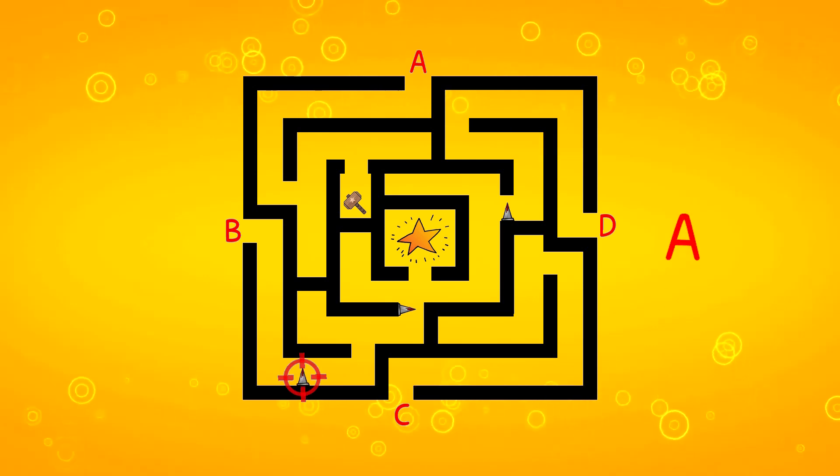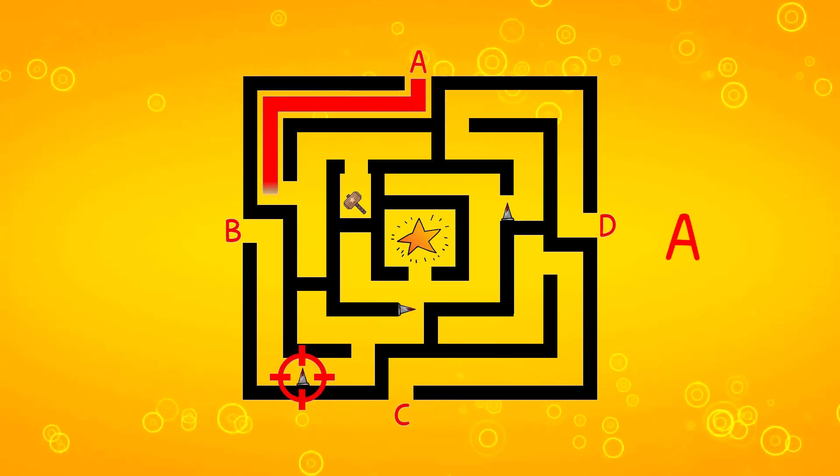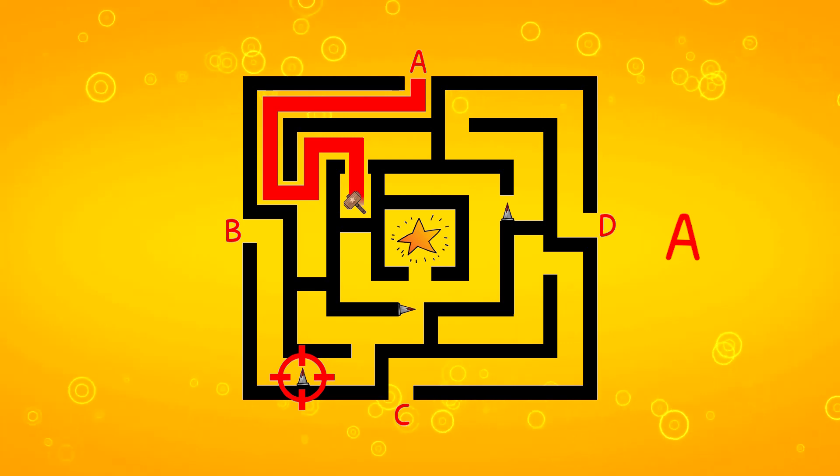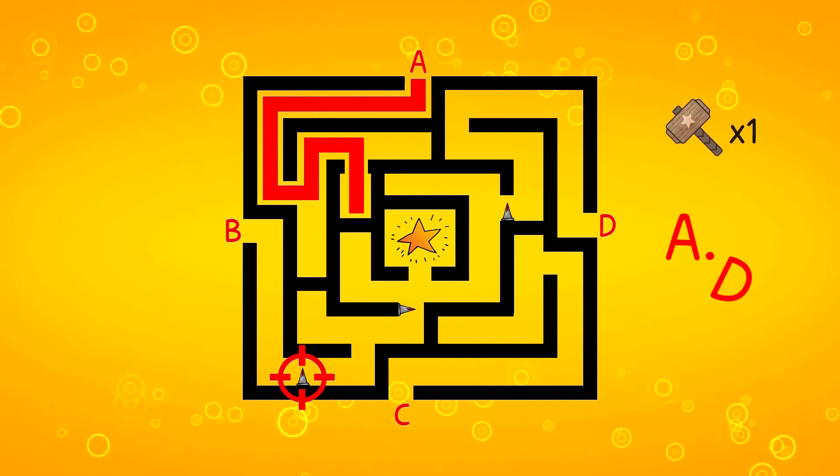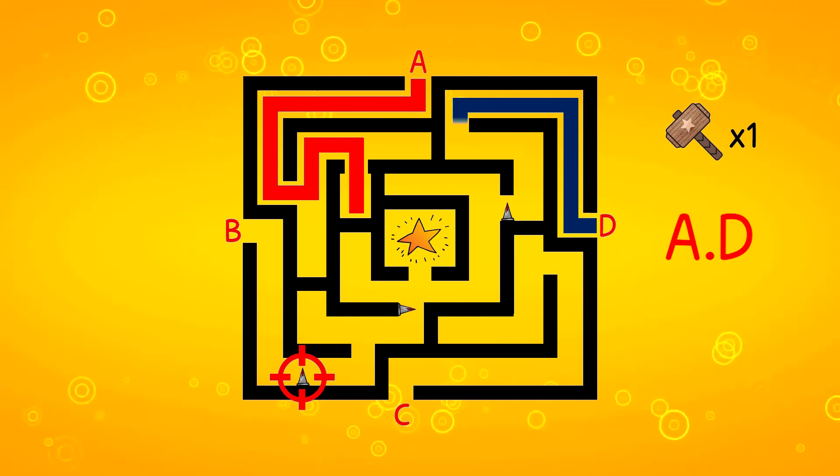First, we need to reach the wooden hammer through path A. Then, using the wooden hammer, we clear the path to reach the star through path B.